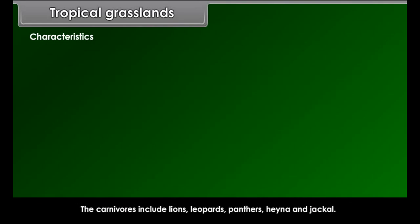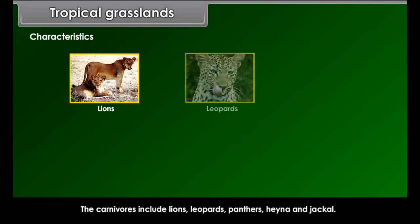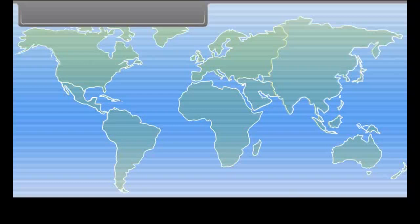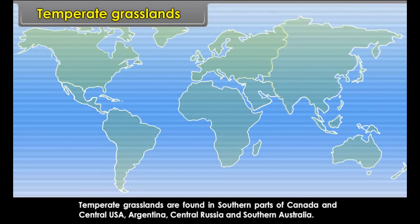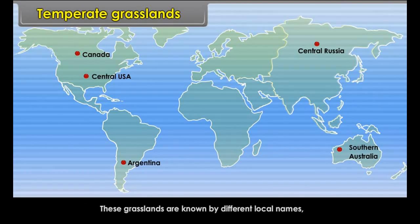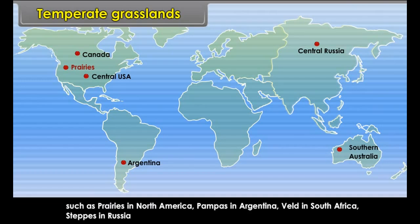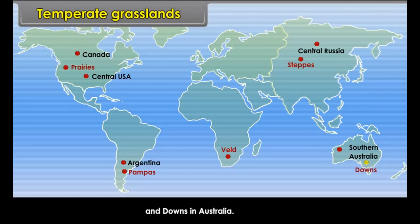The carnivores include lions, leopards, panthers, hyena and jackal. Temperate Grasslands. Temperate grasslands are found in southern parts of Canada and Central USA, Argentina, Central Russia and Southern Australia. These grasslands are known by different local names such as prairies in North America, pampas in Argentina, veld in South Africa, steppes in Russia and downs in Australia.